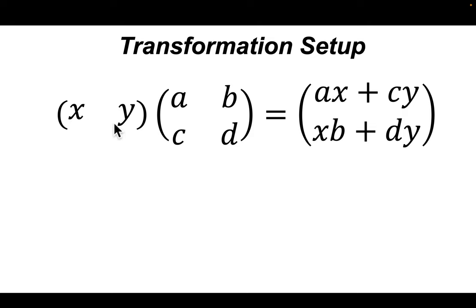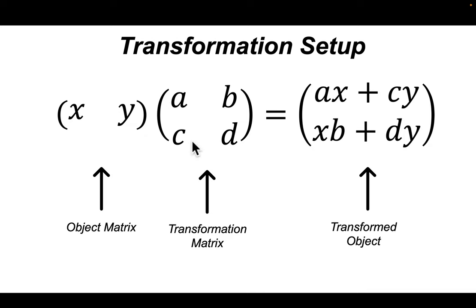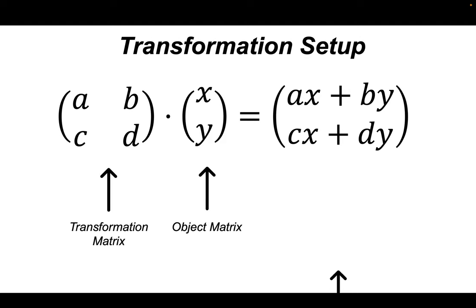If you put your object first, you have to write it as a one-by-two matrix, not a two-by-one matrix, because in order for the matrix multiplication to work, you need this row multiplied by this column. So you can put your object first and then your transformation matrix after that — you'll still have your transformed object. But this can change some of the values of the transformation matrices, because matrix multiplication is not commutative. We're going to do it this way: transformation matrix first, then our object, then our result.